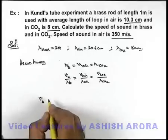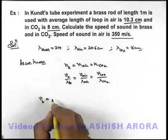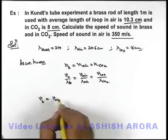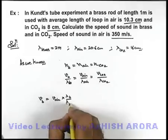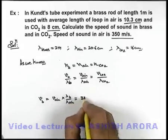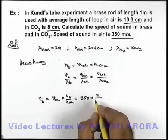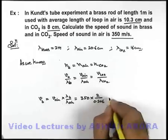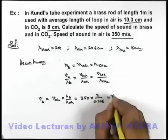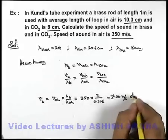Speed of sound in brass can be given as speed in air multiplied by lambda in brass upon lambda in air. If we substitute the values, this will be 350 multiplied by 2 by 0.206. On calculation, this will give us 3400 meters per second. That will be one answer of this problem.